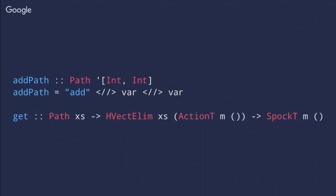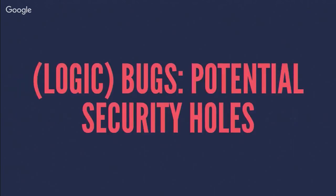In the framework it looks like this: you have a path, you define some static components and some variable components, and they are collected at the type level for you. If you wire it into the function, type inference can find it. Then you have a GET combinator that takes a path with two arguments and a function taking those two arguments, and you wire it up in the Spock monad.